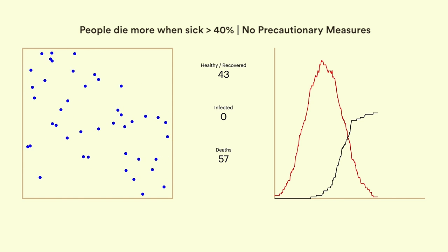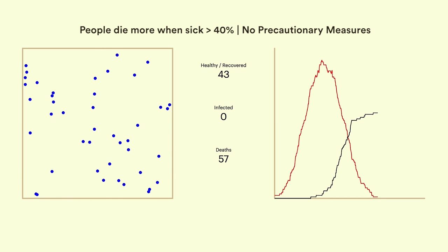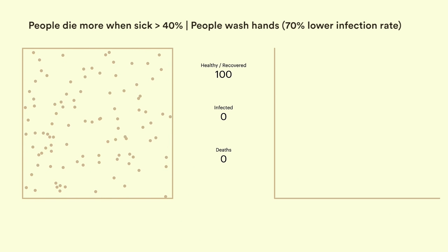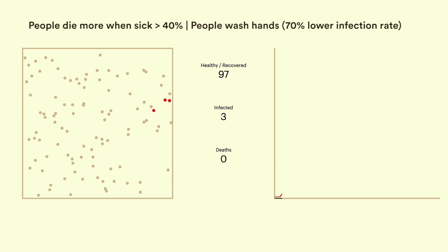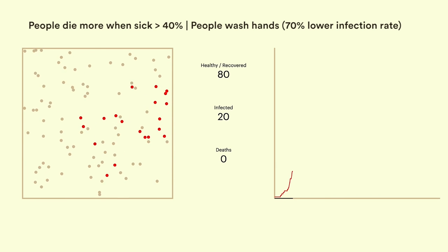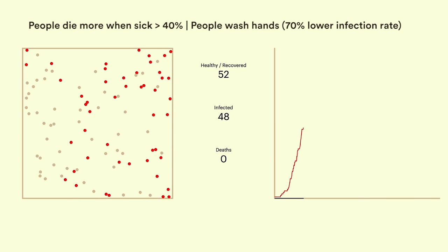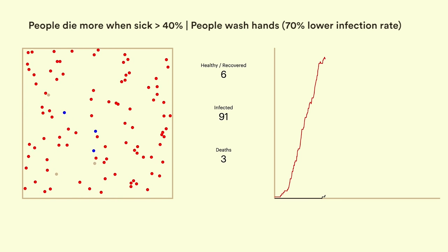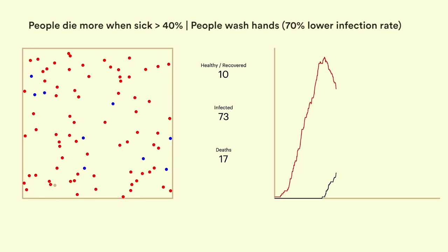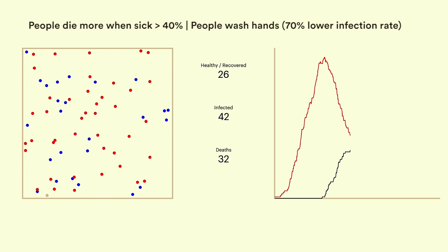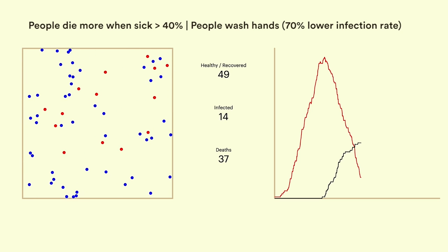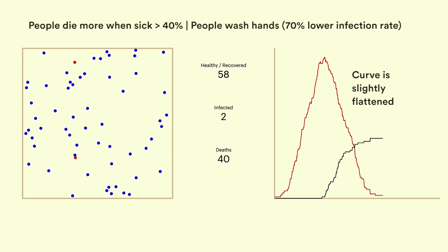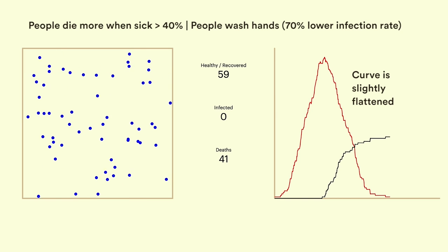For our second scenario, let's see what happens if the majority of the population washes their hands with soaps and sanitizers. Instead of people getting infected instantly, now there will be a 70% probability that they don't get infected at all. Fewer collisions result in infections because people are washing their hands and so the virus cannot transmit even if it reaches them. This is what happened in South Korea where people took great care of their hygiene. But the death rate is still high at 41% — definitely an improvement from 57%, but still high.